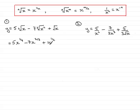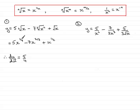Now I have each of the terms in the form ax to the power n, and so I can carry on and differentiate this. So therefore, dy by dx is going to equal: we multiply the power by the number at the front, so we have a quarter times 5, which is 5 quarters. And then we subtract 1 from the power, so that's x to the minus 3 quarters.